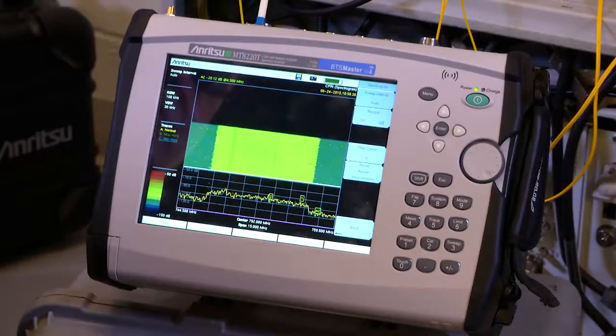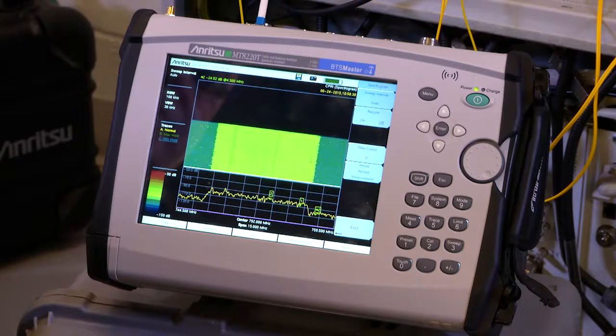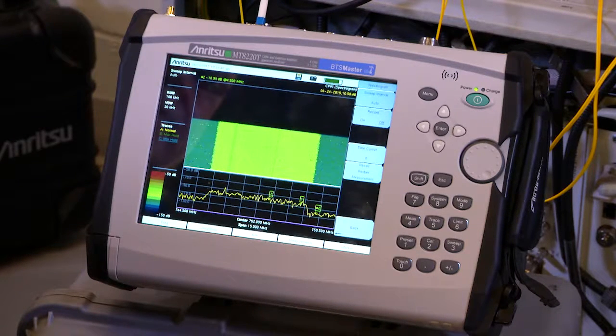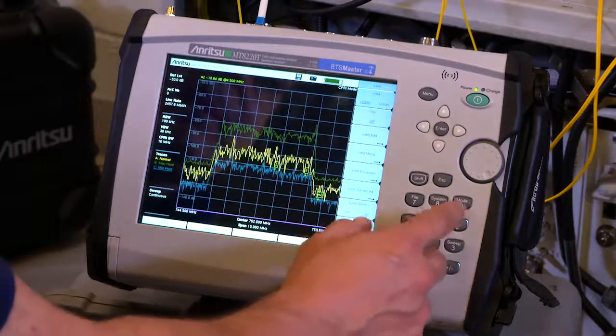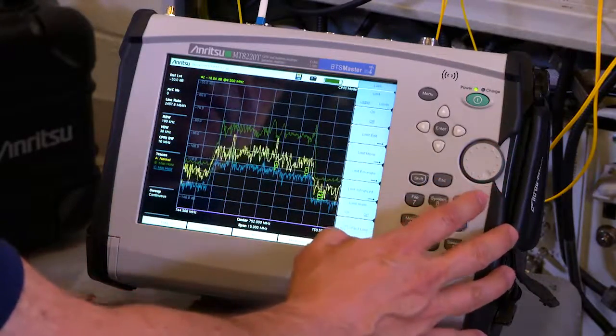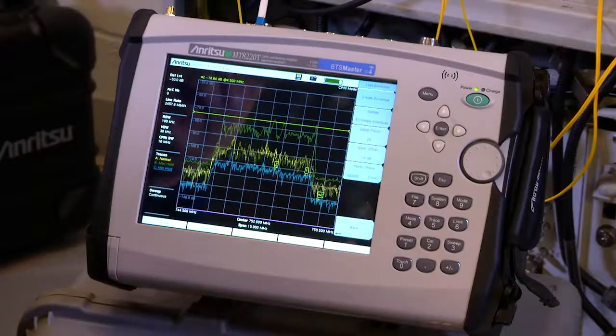When configured, the BTS Master displays the RF spectrum of the signal on the CPRI link. All the familiar functions of the BTS Master spectrum analyzer are available, such as limit lines and markers.